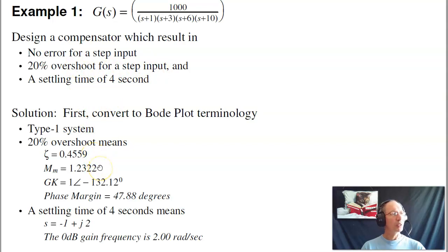No error for step input means type 1 system. 20% overshoot for step response means zeta is .4559, means the resonance is 1.22, means that the phase is minus 132 degrees when the gain is 1, means the phase margin is 47 degrees. So what I want is the phase to add up to minus 132 degrees. That gives me 20% overshoot.